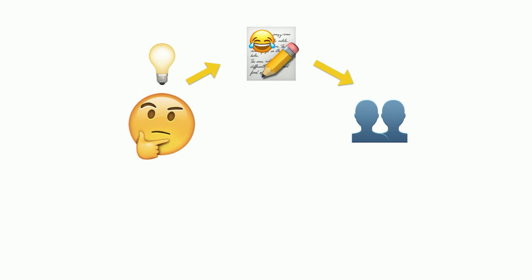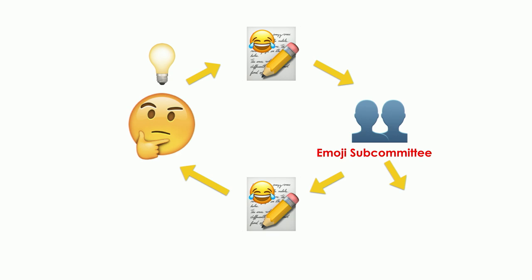First of all, anyone can submit an emoji proposal. You have your idea, then you write a proposal, and submit it to the emoji subcommittee which talks about it. Sometimes they'll kick it back to you and you go around and around the circle — they'll have feedback, they don't like your design, they don't think your statistics are good. These meetings are really funny because they're kind of like C-SPAN but around emoji.